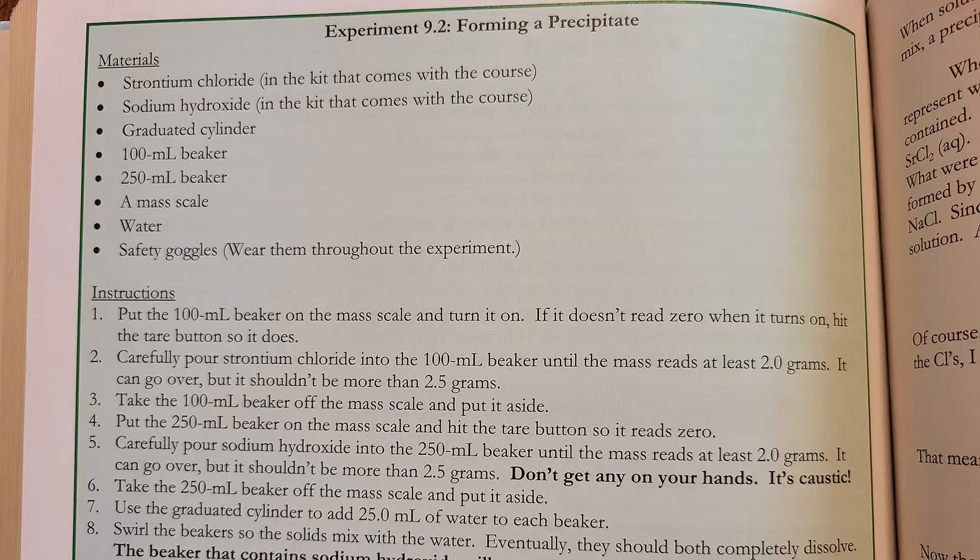On page 264 in your book, there's an experiment that produces a precipitate. It's a mixture of a strontium chloride solution and a sodium hydroxide solution. When we say solution, we mean it's been dissolved in water - that's what the aqueous symbol means. When these are mixed together, they form solid strontium hydroxide. We know enough now to write down that chemical equation and balance it. Let's take a shot at that.